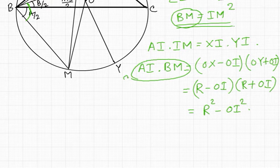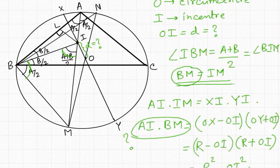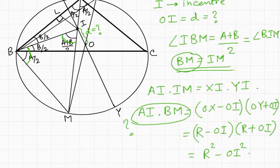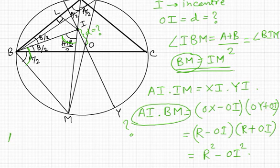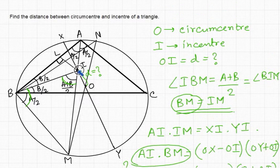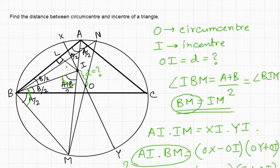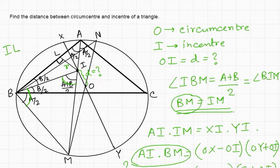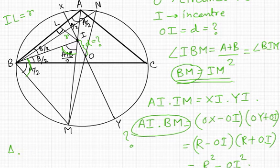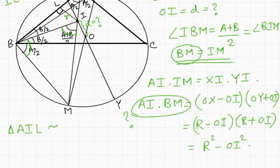Now let us find AI · BM. From the incenter, we drop a perpendicular to side AB, with foot of perpendicular at L. Since the perpendicular from the incenter to any side equals the inradius, IL = r.